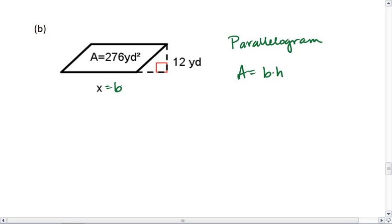Here x is our base, 12 is our height. Notice our pretty right angle here. And we know our area. So we get 276 equals x times 12. x equals 276 divided by 12, which is going to be 23 yards.